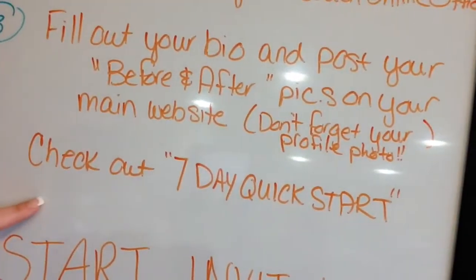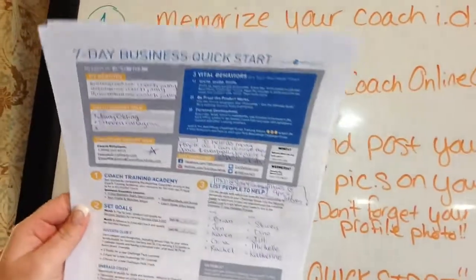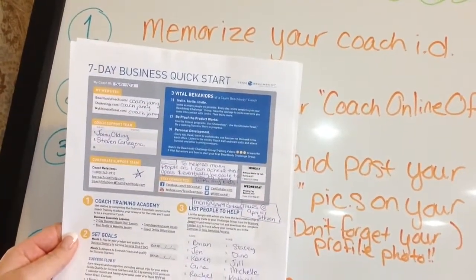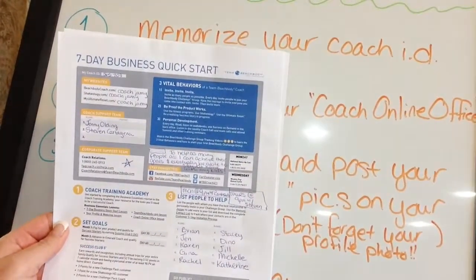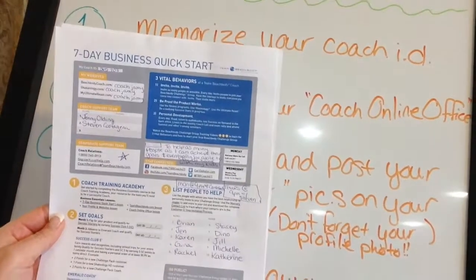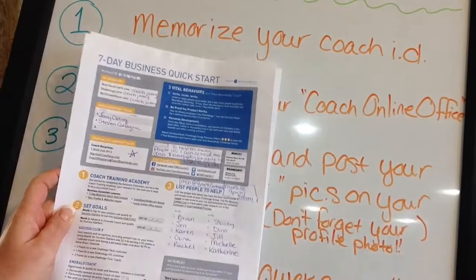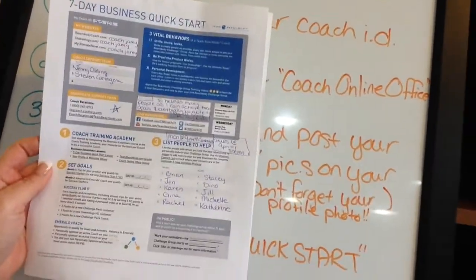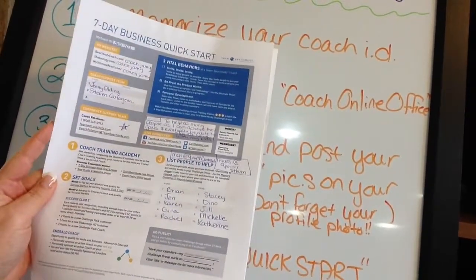Next, you want to check out the 7-Day Quick Start. I'm not going to go through everything because you can read it all, but definitely check this out. You want to pay attention to things like coach relations — that phone number, you'll be calling them sometimes. And you want to set your goals and things like that.